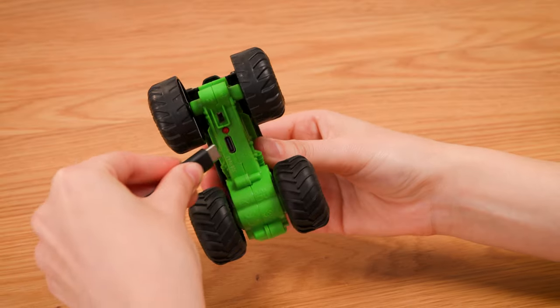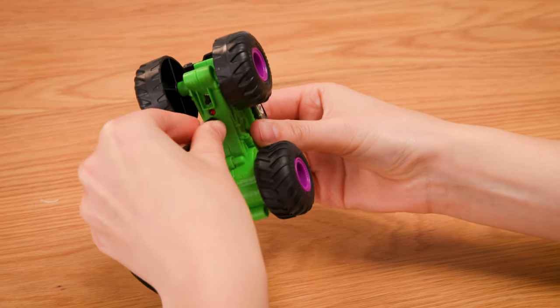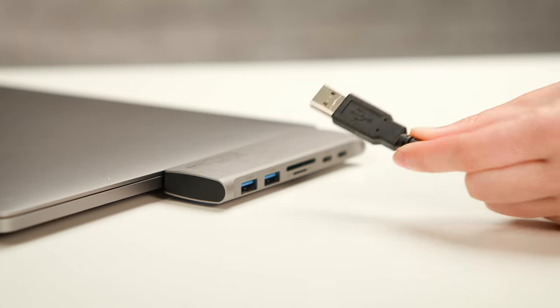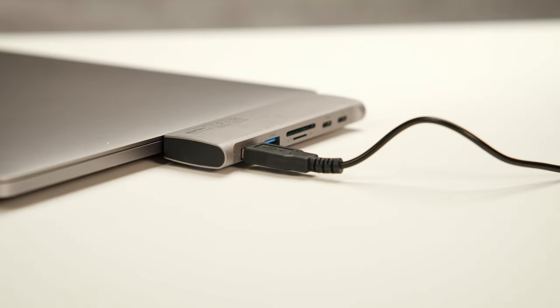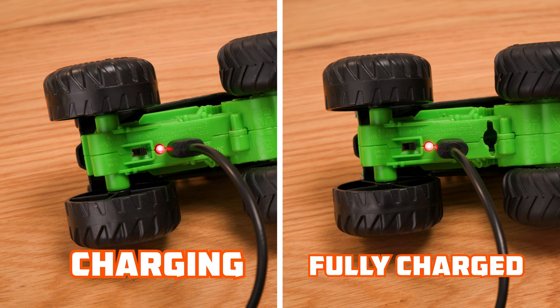Plug the small end of the USB charging cable into the charging port near the power switch. Plug the large end of the cable into a USB computer port or charging cube. The on-off LED will pulse when the truck is charging and remain on when fully charged. Please make sure to wait for the battery to be fully charged so that you get the best performance out of Grave Digger.